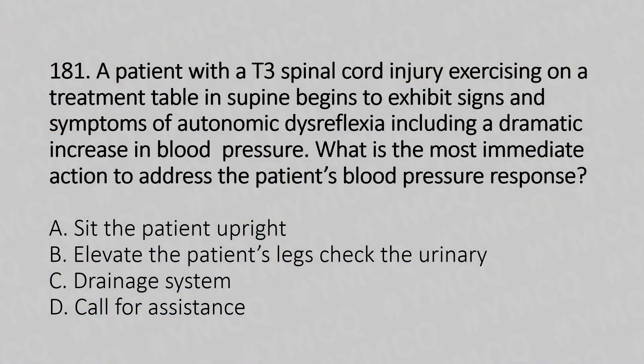A patient with T3 spinal cord injury exercising on a treatment table in supine begins to exhibit signs and symptoms of autonomic dysreflexia, including a dramatic increase in blood pressure. What is the most immediate action to address the patient's blood pressure response?